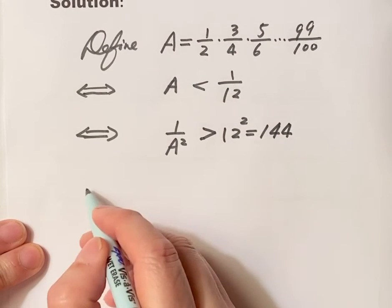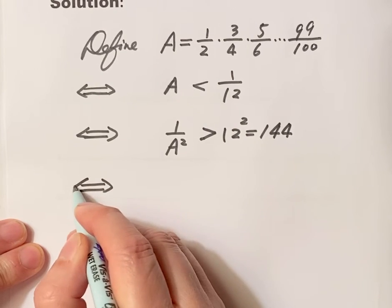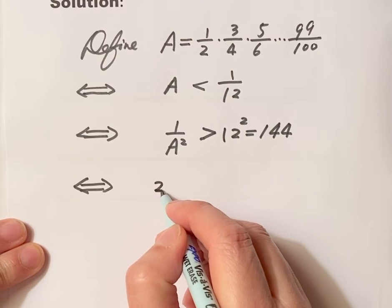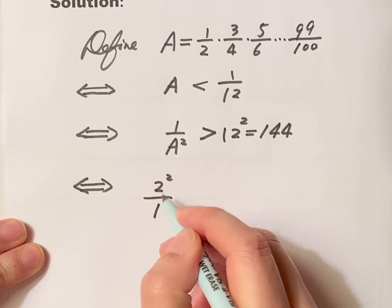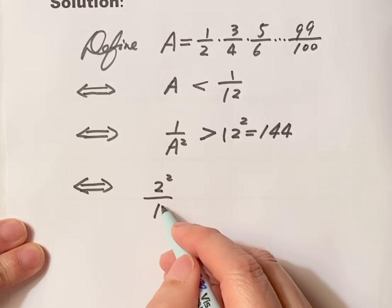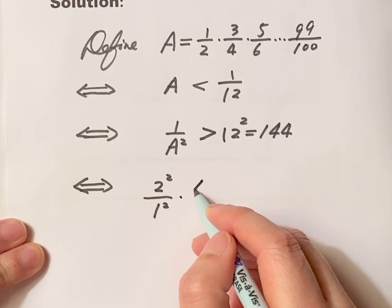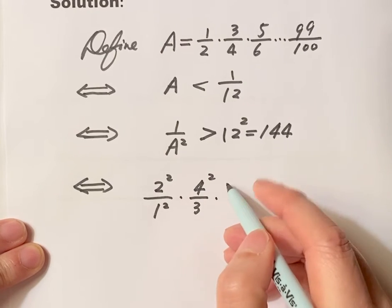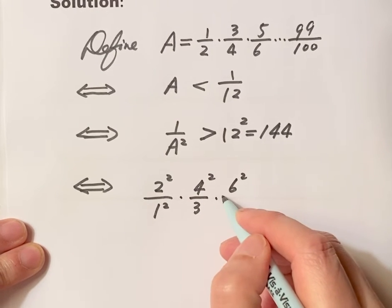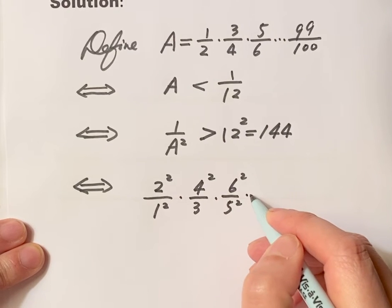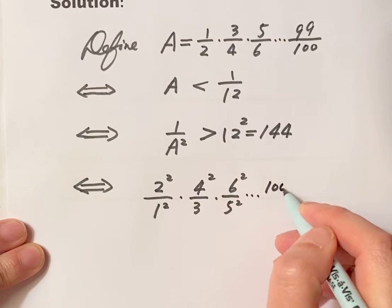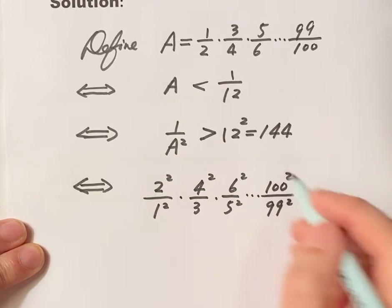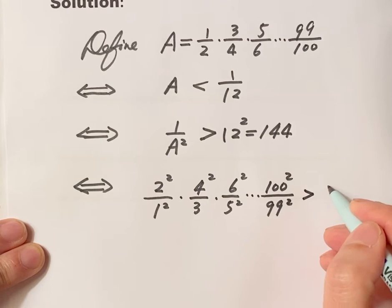What is the left-hand side? That's 2 squared over 1 squared, 2 squared over 1 squared, times 4 squared over 3 squared, times 6 squared over 5 squared, until 100 squared over 99 squared, bigger than 144.